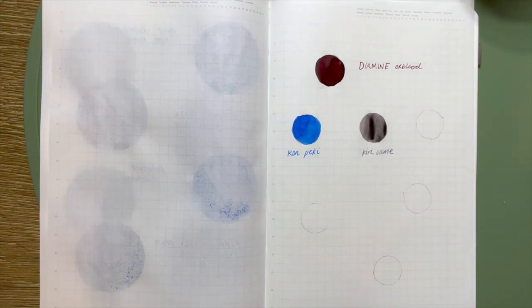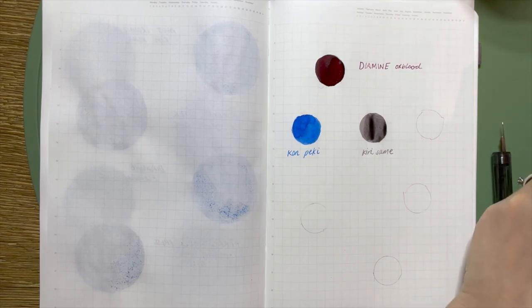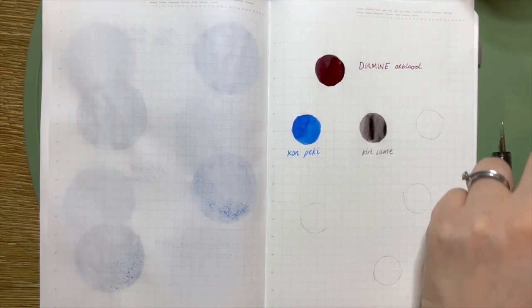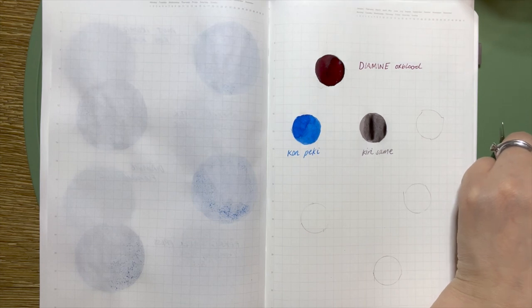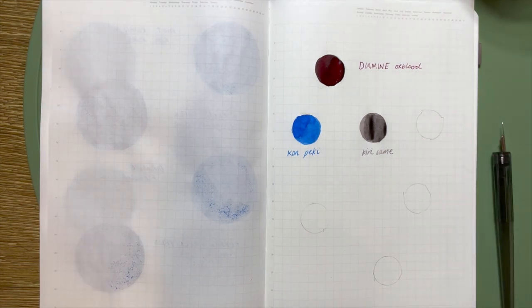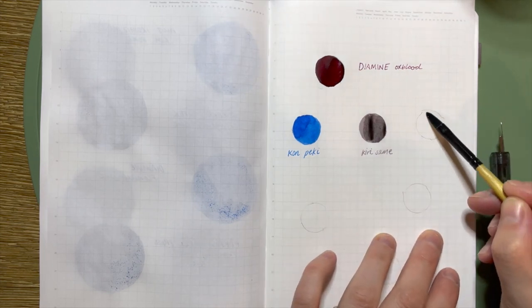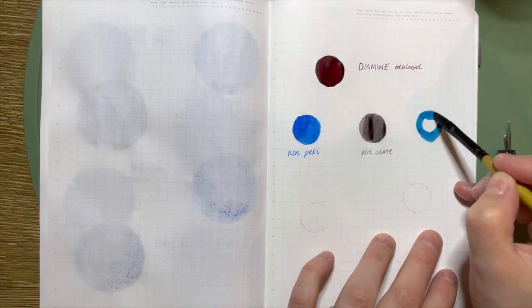I think it's dark enough that you could use it for longer writing where it's still going to be legible, but it's the warmth in it that I really love, the undertones of purples or pinks or something that just makes it a little bit more interesting.